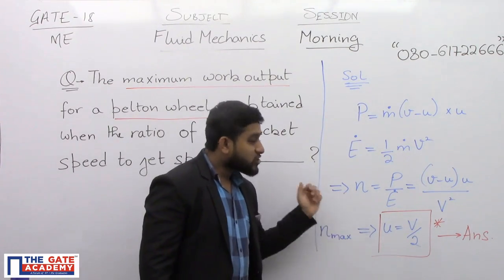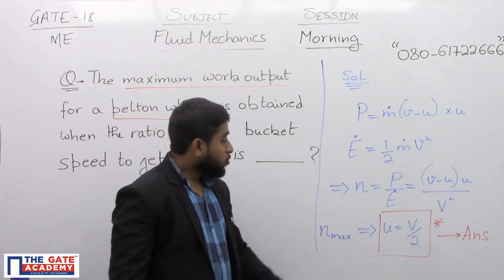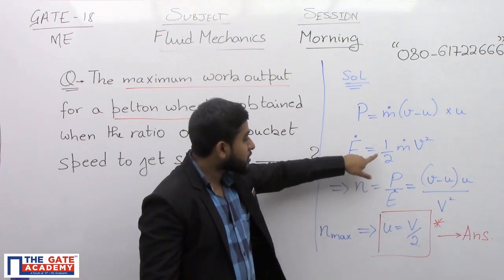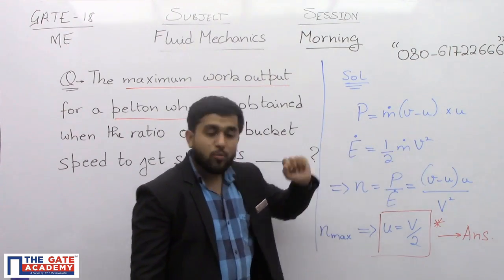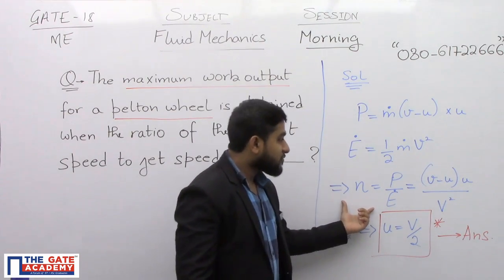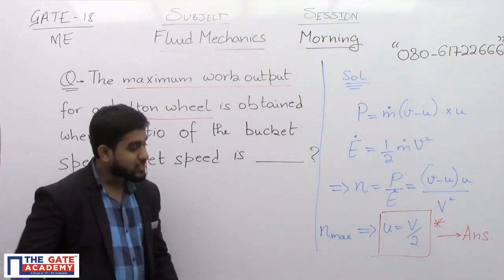And when we talk of the efficiency, this efficiency is the ratio of the power generated in the turbine to the energy issued by the nozzle. Now, when we talk of energy issued by the nozzle, it is half m dot small v square. When you will put all the quantities, this efficiency will become small (v minus u) into u by small v square.